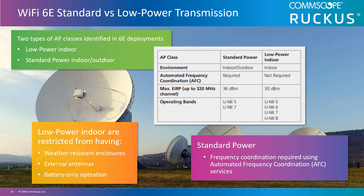Standard power indoor or outdoor APs are required to support and enforce automated frequency coordination (AFC) services. Wi-Fi AFC provides a list of frequencies where the AP can operate safely without interfering with other incumbents like fixed microwave operators. Standard power APs must connect to a cloud AFC database, report their position, and the AFC then assigns a specific operating channel for the AP.